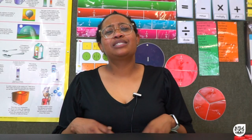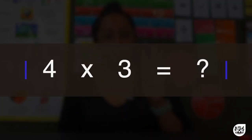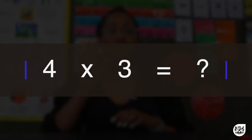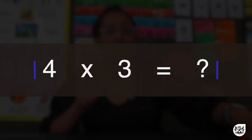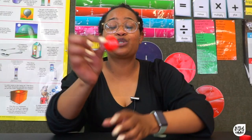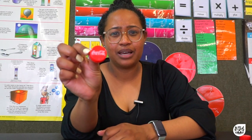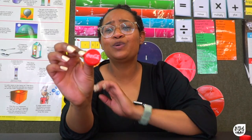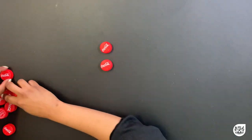So let's have a look at arrays in a more practical manner. The following array represents 4 times 3. I use bottle caps, but you can use any objects lying around in your house.